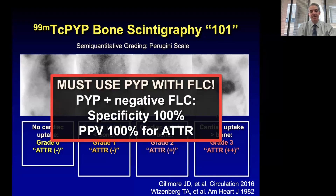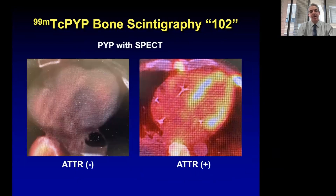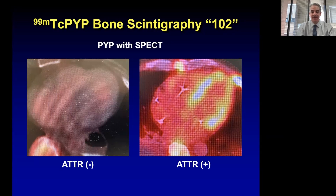Critically, you must use this test only once you've ruled out AL amyloidosis. The specificity and positive predictive value is so high — after ruling out an abnormal M protein — that this can achieve a non-biopsy diagnosis of ATTR amyloid. Nowadays we also pair this with SPECT imaging to enhance specificity. In a true positive, the bright yellow-orange uptake makes a horseshoe pattern denoting uptake in the ventricle, as opposed to a blood pool pattern where the uptake is not within the myocardium.